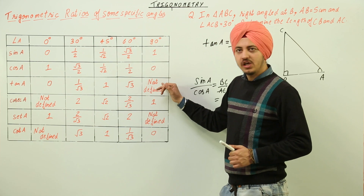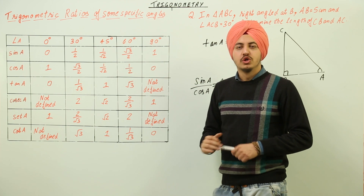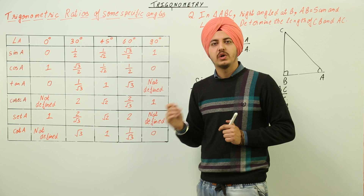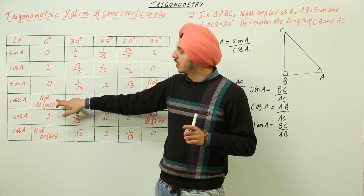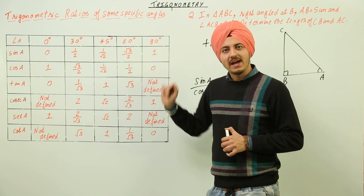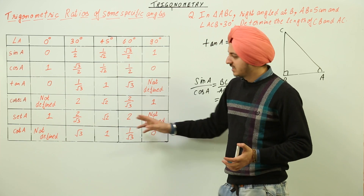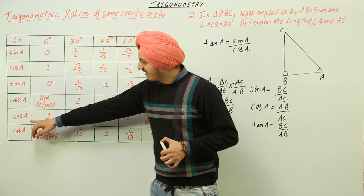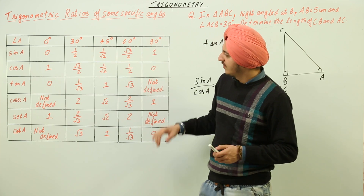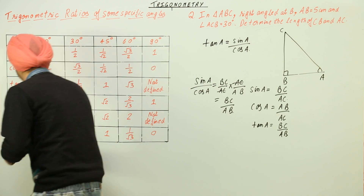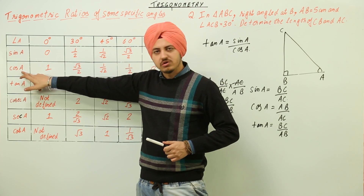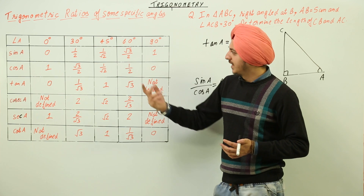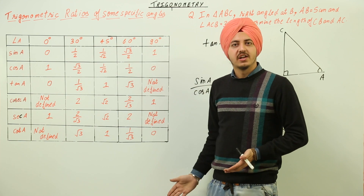For values that are not defined: sin A divided by cos A at 90° gives 1/0, which is infinity — we call it not defined. Anything divided by 0 is not defined. Similarly, cosecant A is the reciprocal of sin A, so at 0° it is 1/0, which is again not defined. Secant A is the reciprocal of cos A, and cot A is the reciprocal of tan A. That is how we construct this table. Just remember the values of sin A and the rest can be calculated.